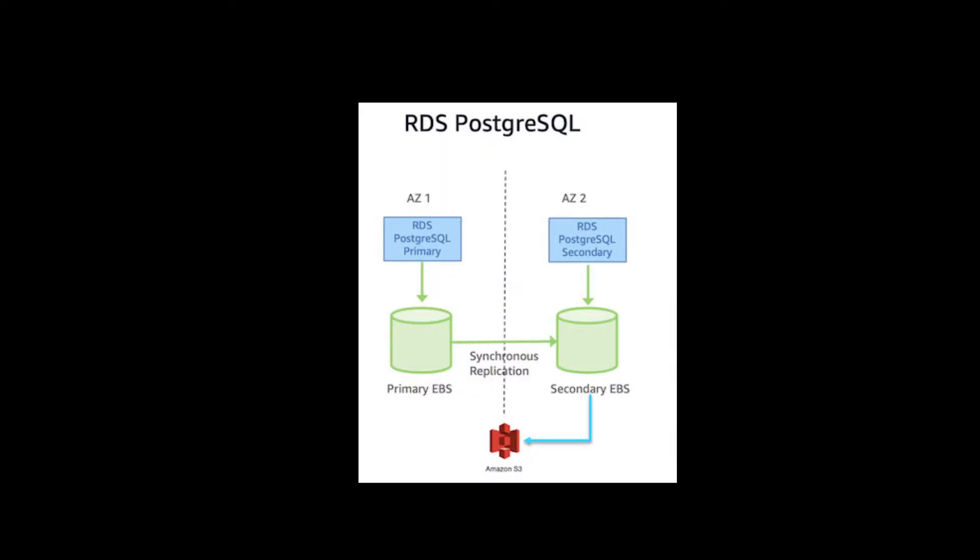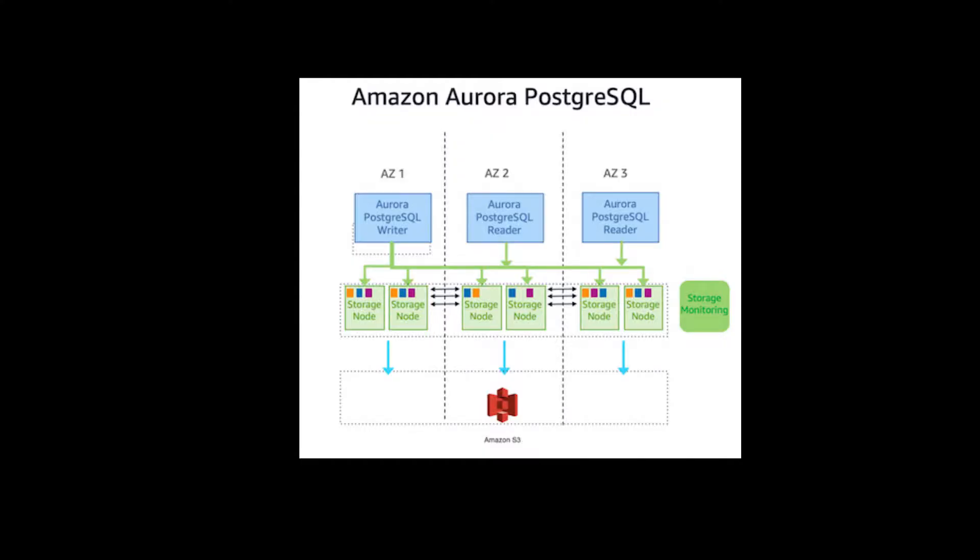The way that Aurora handles replication is also different. On the RDS version, replication is synchronous — it comes from the logs of one instance and is pushed across to the other instance. That's not what happens on the storage nodes. It doesn't read off the logs anymore because the storage is separate from the compute; it's actually replicating the storage itself across those availability zones.